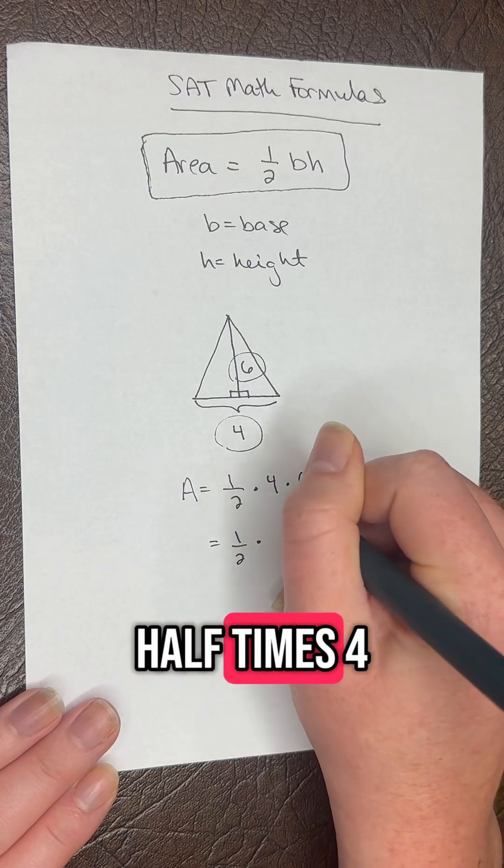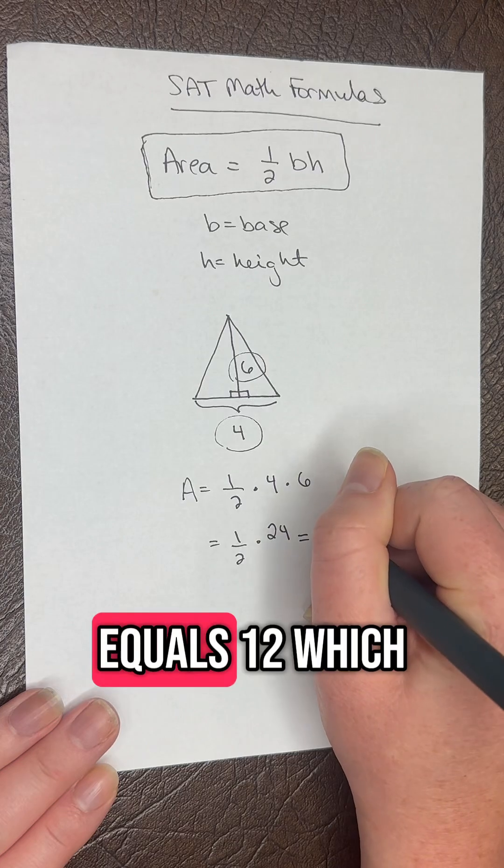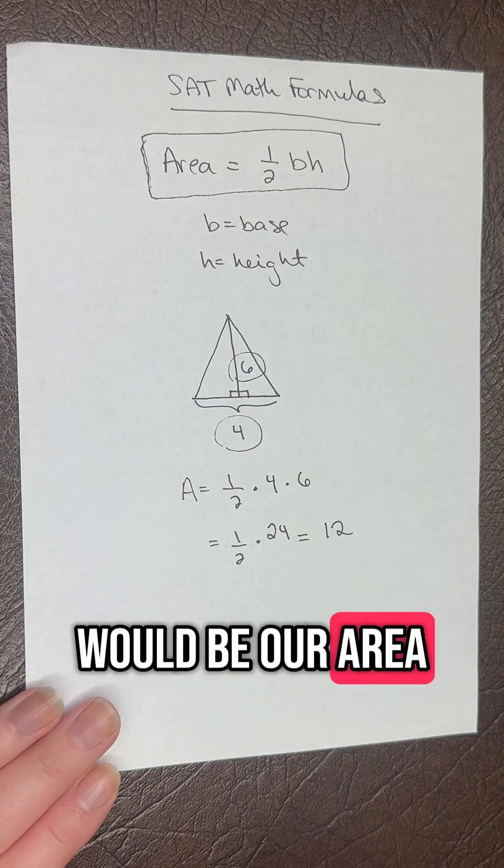If we simplify this, we'll have one half times 4 times 6, so times 24, equals 12, which would be our area.